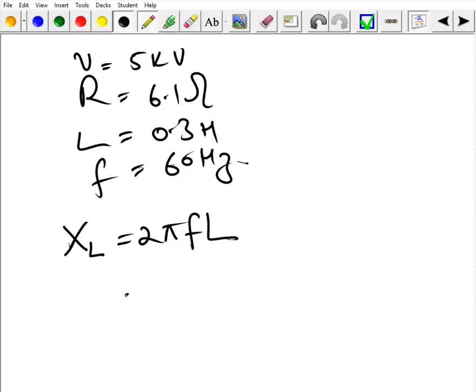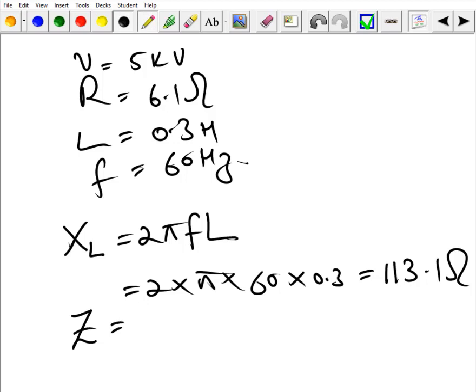For XL, R is equal to 2 into π, F is 60, and L is given as 0.3, so this comes out to be approximately 113.1 ohms. We can find the impedance Z is equal to square root of R square plus XL square.